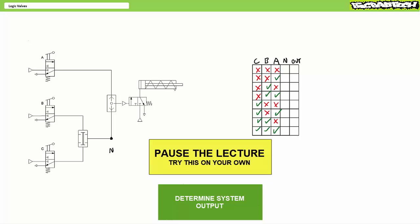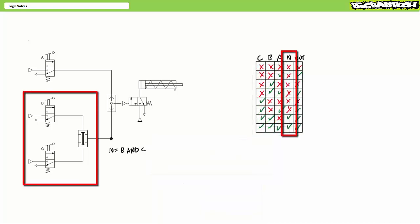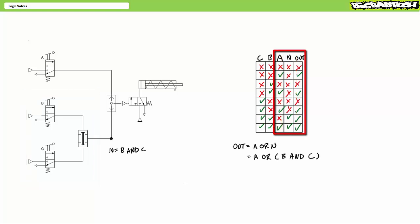If you're tracking, you should have obtained the following results. As one might expect, the AND valve produces an output at N only when signal is present at both B and C. Intermediary signal N would look like this. The OR gate produces an output when there is a signal present at either input A or N. Final output would look like this.